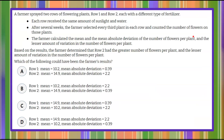Here's our question today. A farmer sprayed two rows of flowering plants, row one and row two, each with a different type of fertilizer. Each row received the same amount of sunlight and water. After several weeks, the farmer selected every third plant in each row and counted the number of flowers on those plants.